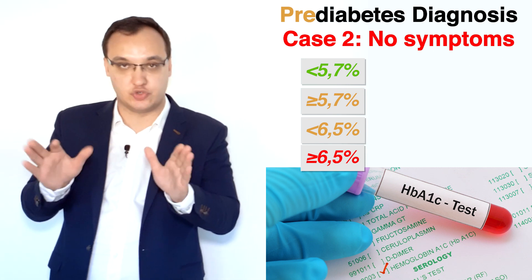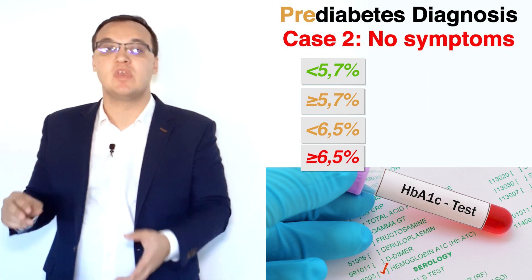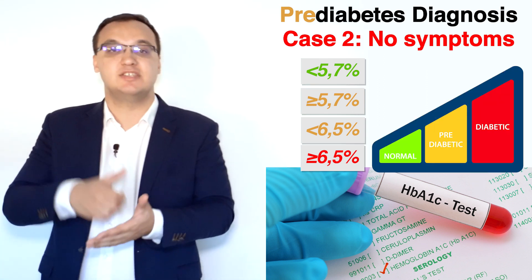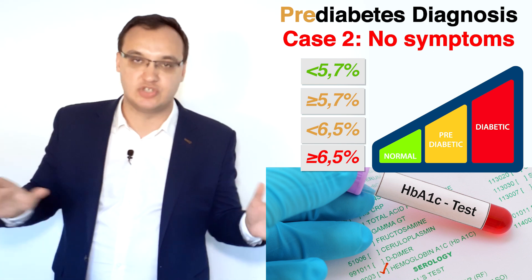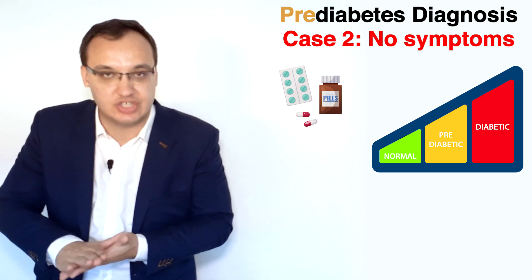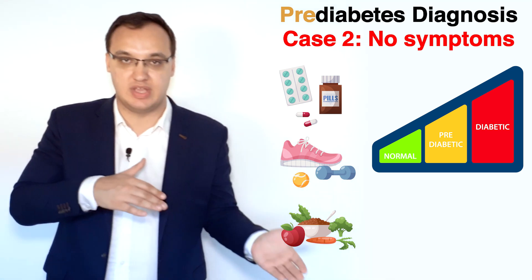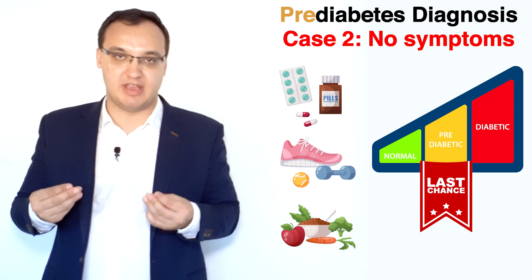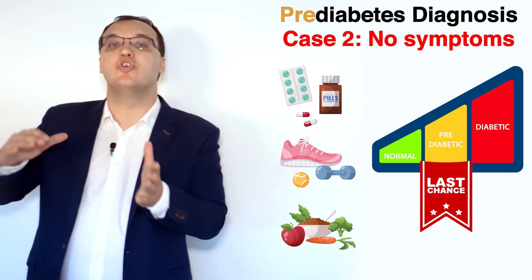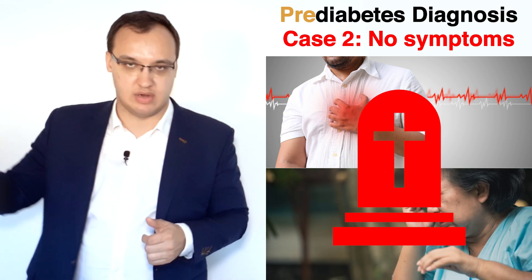If HbA1c is less than 6.5% — good, since 6.5% and above is diabetes. The pre-diabetes range is 5.7% to 6.5%. Pre-diabetes is important because it's the last opportunity for the patient to fix it. Once you have diabetes, you likely need lifelong medication, exercise, and diet. With pre-diabetes you still have a chance. Otherwise complications follow — heart attack, stroke, and so on.